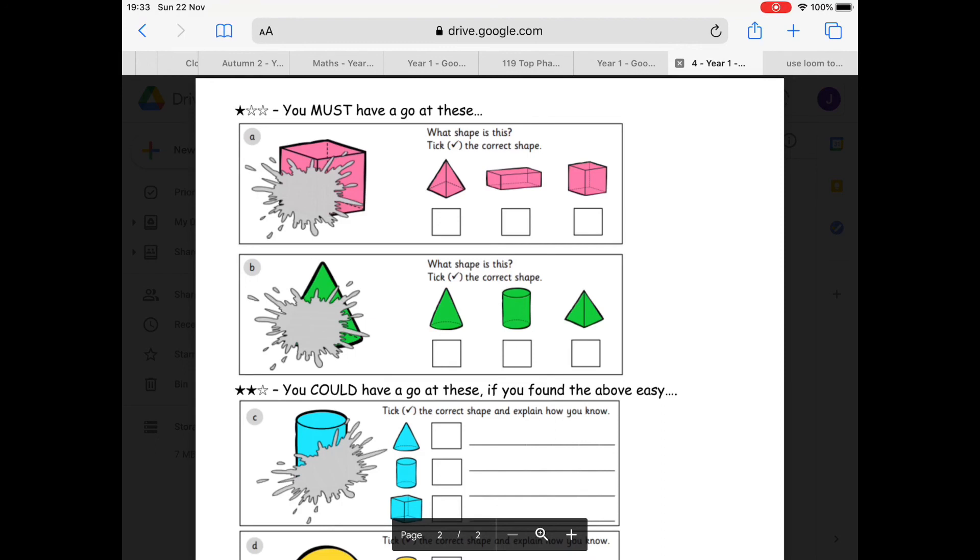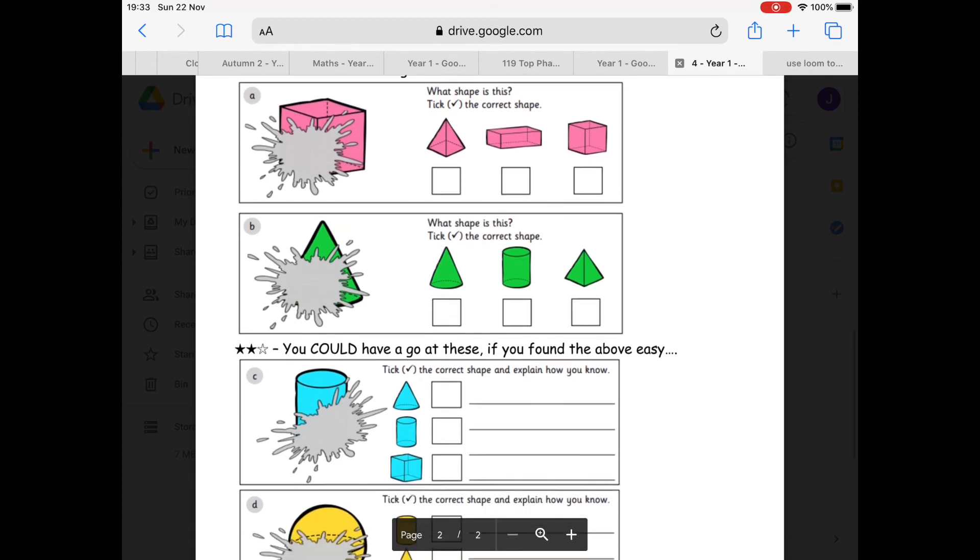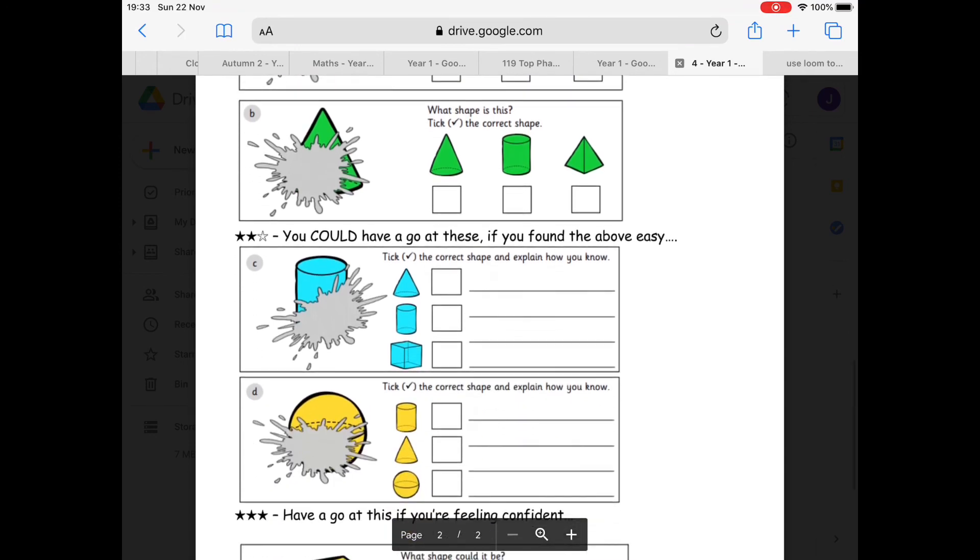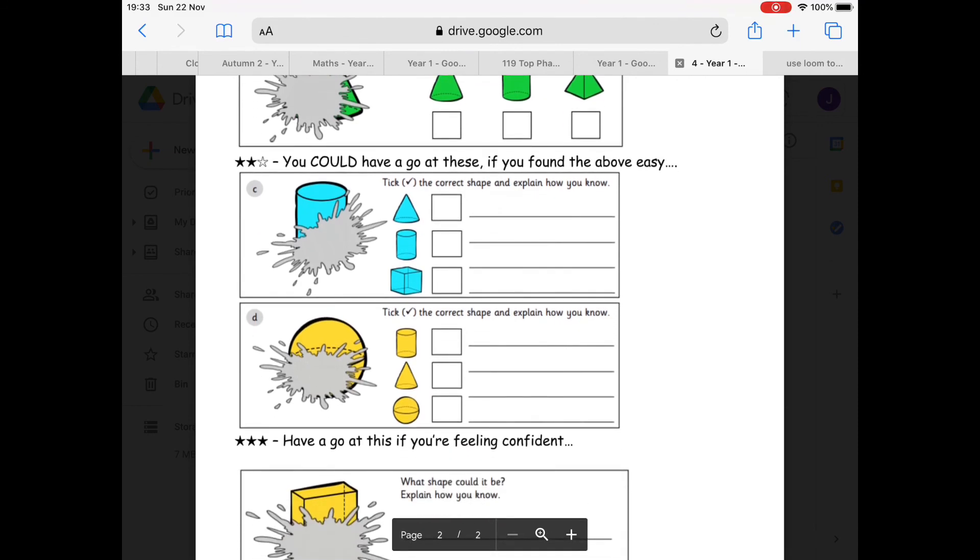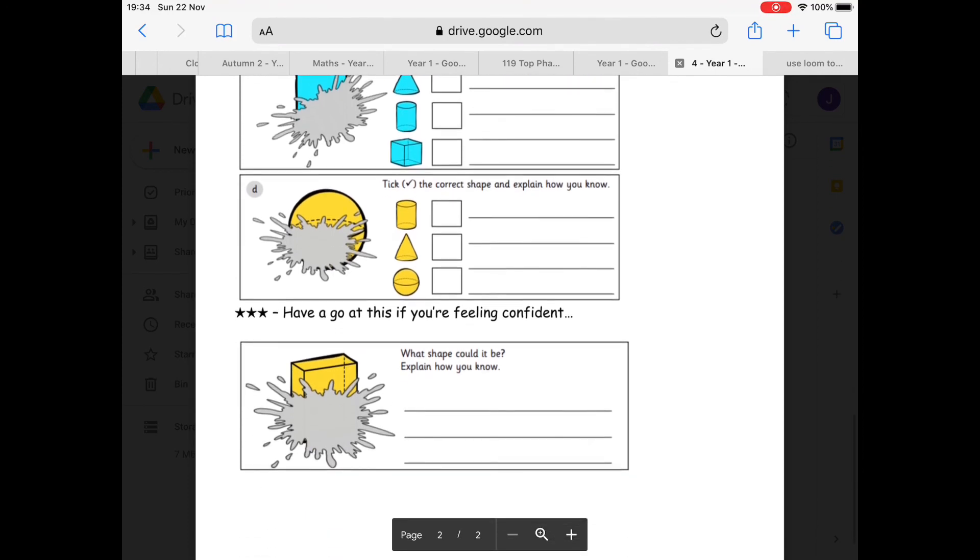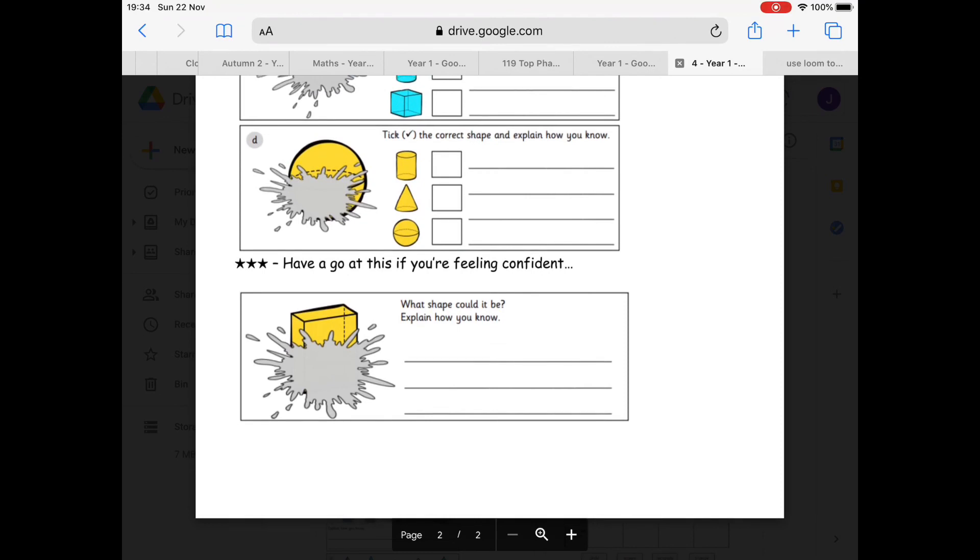So 2A is circle the cuboids and tick the cones in that first row, and in the second row, circle the spheres and tick the cylinders. Then we've got some other challenges. You must have a go at these first ones. The one star challenge: that's silly spilt coffee on those 3D shapes. What shape is the first one? Tick the correct shape. If you found those easy, have a go at the two star challenge. Not only tick the right shape, but also explain how you know it's the right one. And the last question, if you're feeling really confident, you can work out which shape has been covered by my coffee splodge and how you know. So that's the task for today. I hope you had a really nice weekend and good luck with today's maths.